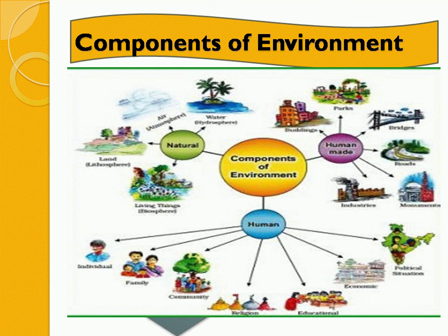Components of environment. What are the components we are going to learn? Natural component, human made and human. So these three are the components of environment: natural, human made and human.